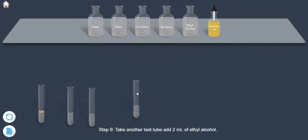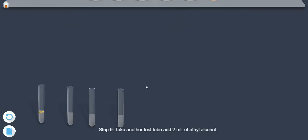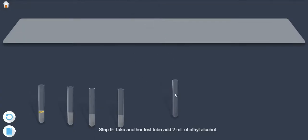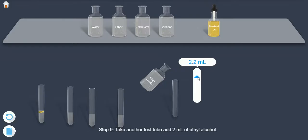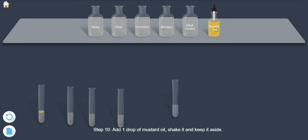Step 9. Take another test tube, add 2 ml of ethyl alcohol. Step 10. Add 1 drop of mustard oil, shake it and keep it aside.